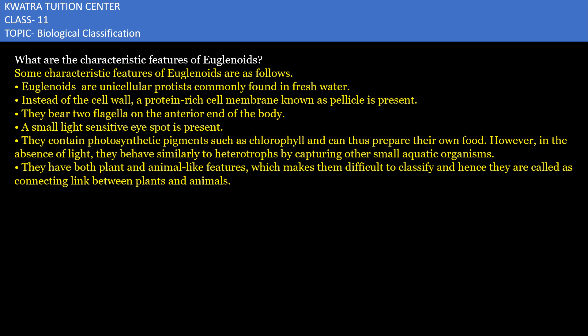Hello everyone. So the question here is: what are the characteristic features of euglenoids? Euglenoids belong to the kingdom Protista and they are unicellular organisms.